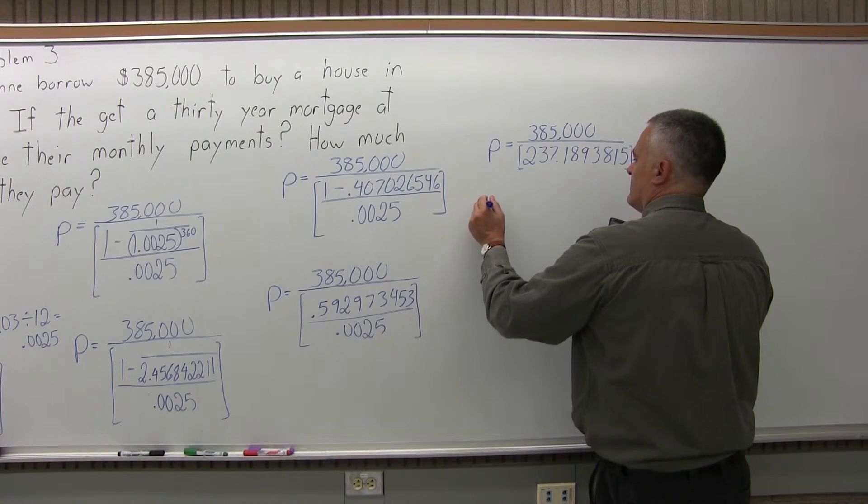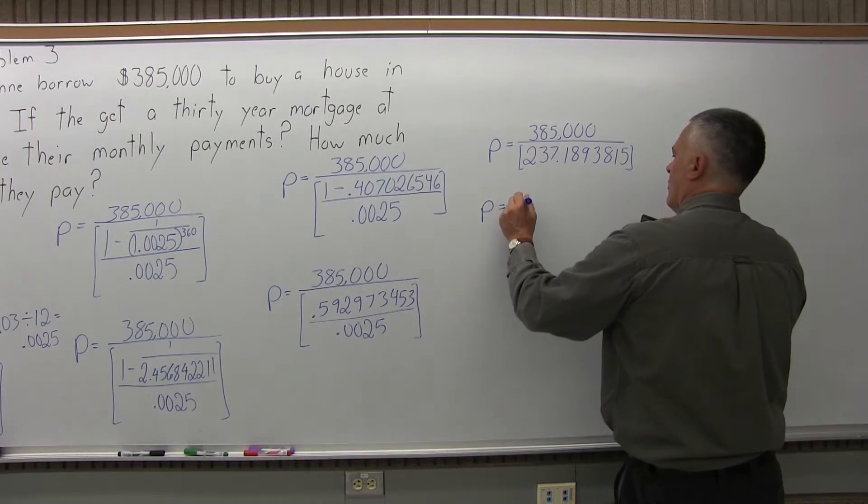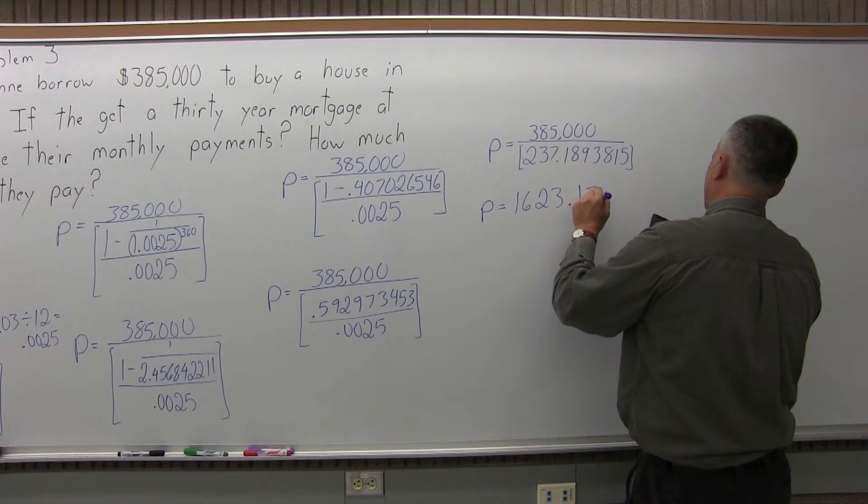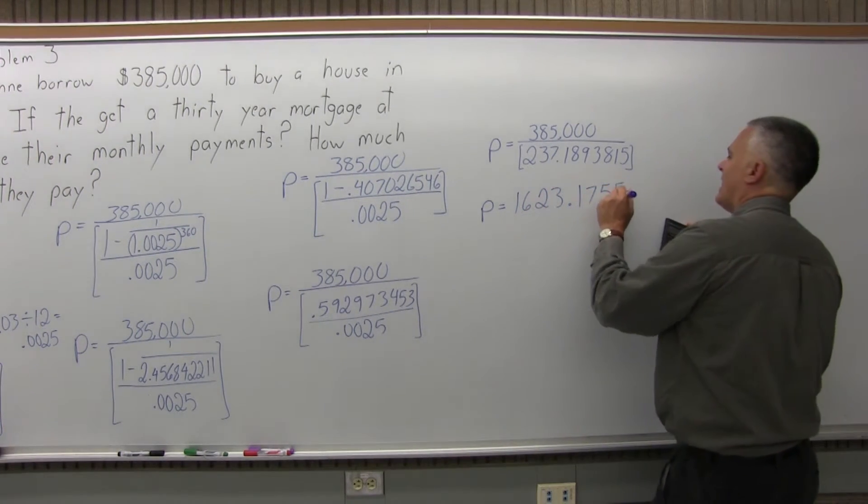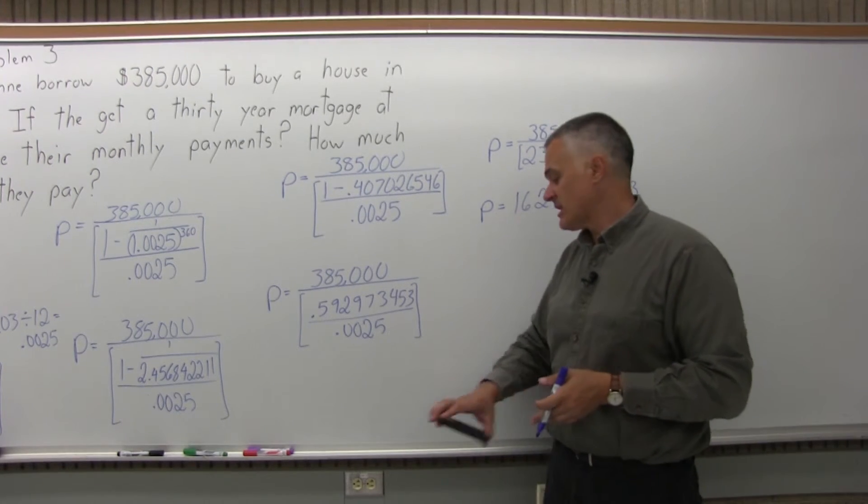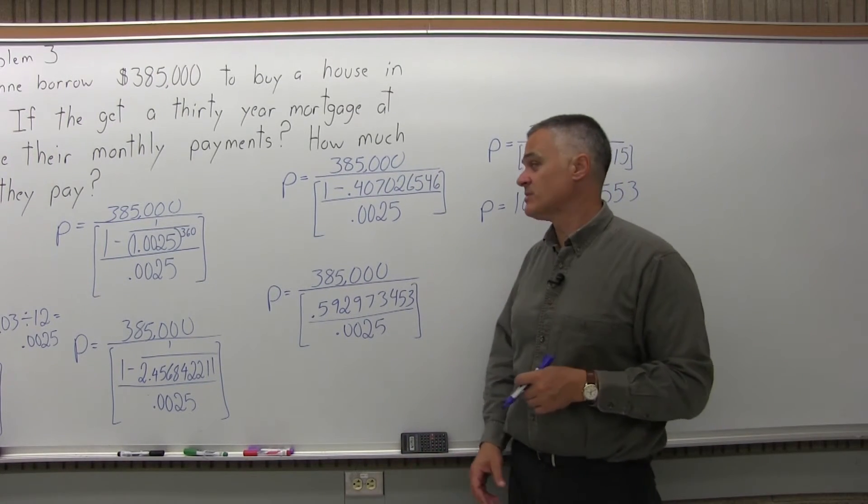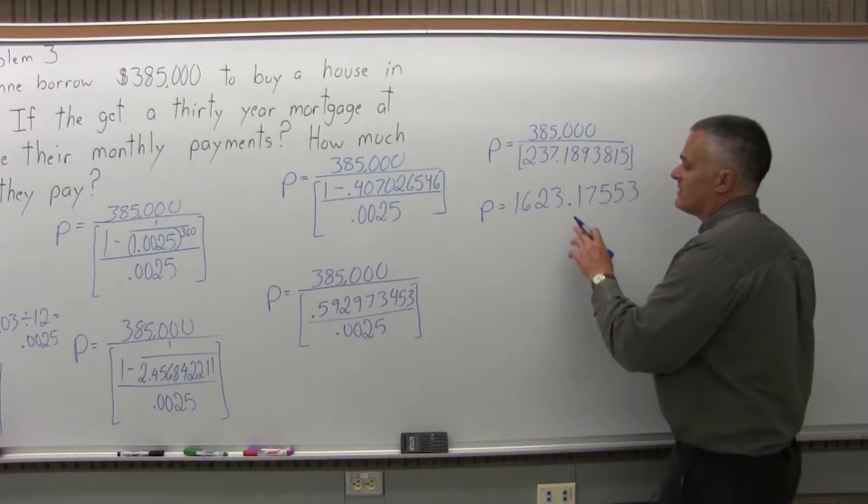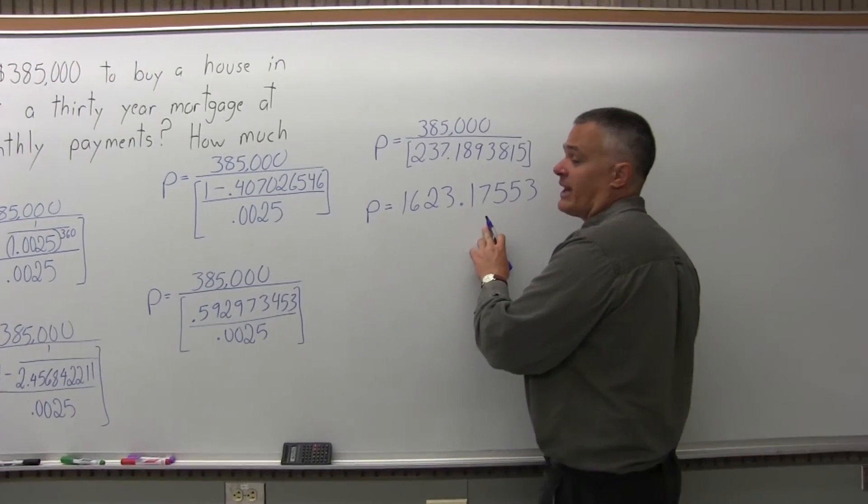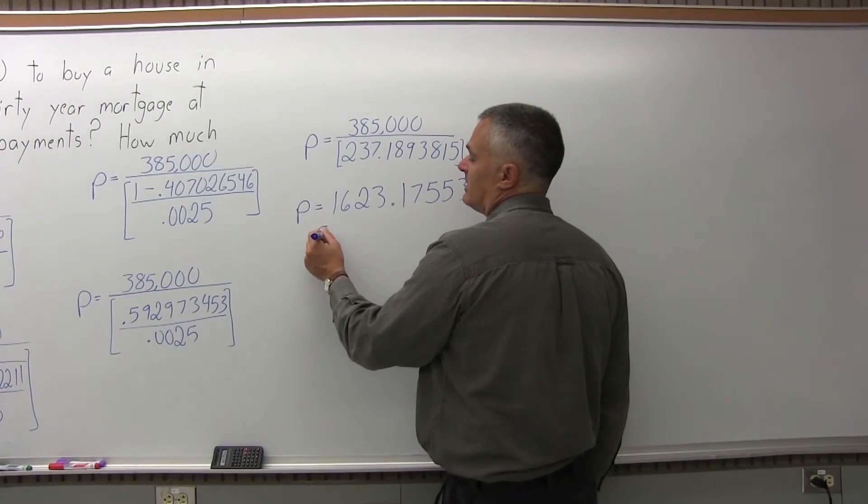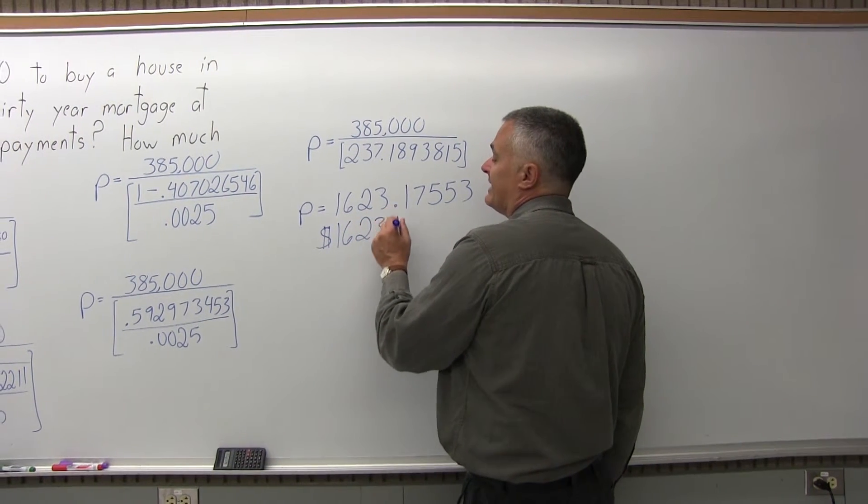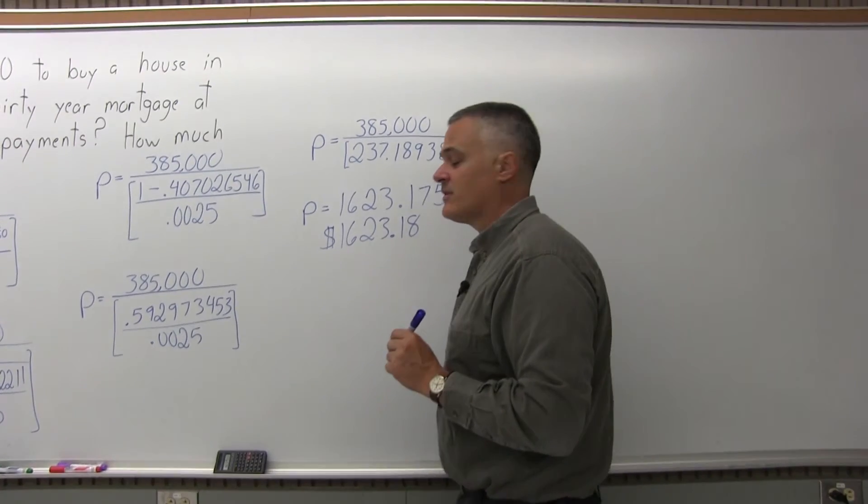And the calculator gives me an answer of 1623.17553. This is the point in the problem where I want to get rid of some of those decimals. I only want two places after the decimal because this is in terms of money, how many cents. After the decimal, I have .175 something, so it's enough to make it .18 or 18 cents. So the monthly payment is going to be $1,623.18. So they pay that every month for their mortgage.